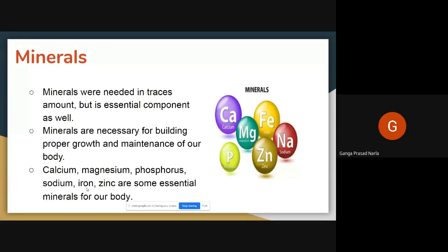Vitamins and minerals are both our friends. They work together to keep our body healthy and protect us. Vitamin D helps us absorb calcium and phosphorus — if vitamin D is not there, the body cannot absorb calcium and phosphorus. So vitamins and minerals both are needed in small amounts but are very essential and important components in our body.